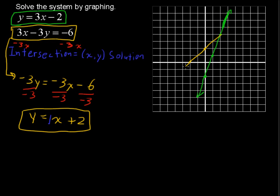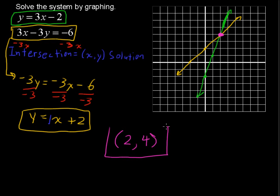This line cuts right across the crosshairs there, and we see the point of intersection. That intersection happens to be (2, 4), so that will be our solution — that is the x-y pair. If you plugged in 2 for x and 4 for y into each of these equations, both of those would be true. And that's how you solve a system by graphing.